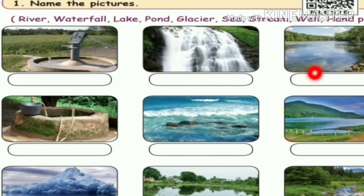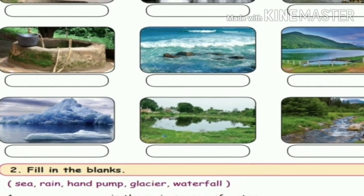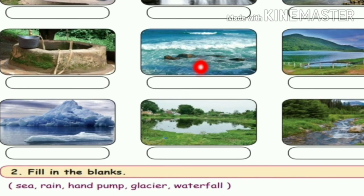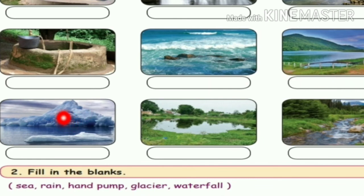Next is river — R-I-V-E-R river. Next is well — W-E-L-L well. Next, what is this? L-A-K-E lake. At the picture: glacier — G-L-A-C-I-E-R glacier. Next: pond — P-O-N-D pond. It is stream — S-T-R-E-A-M stream.